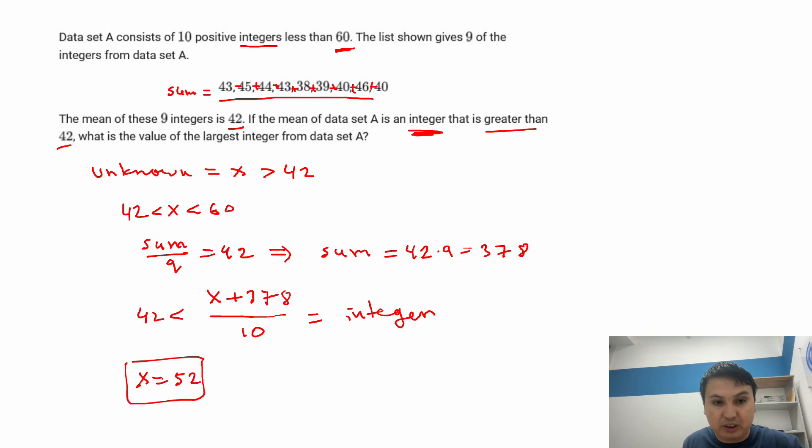Now we need to look at which one is largest. So here, all my values are less than 50, but this is 52. So my answer is 52.